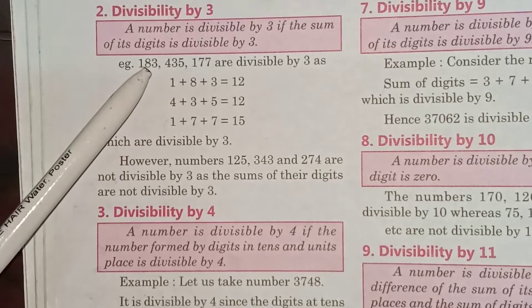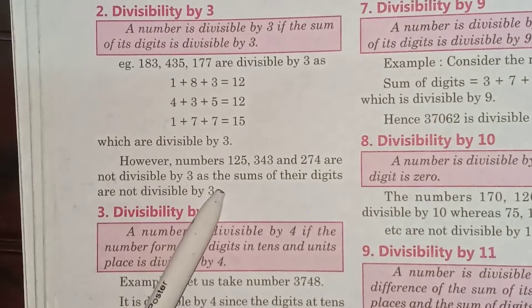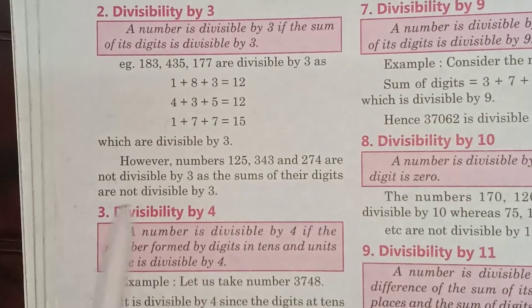However, numbers 125, 343, and 274 are not divisible by 3 as the sum of their digits are not divisible by 3.